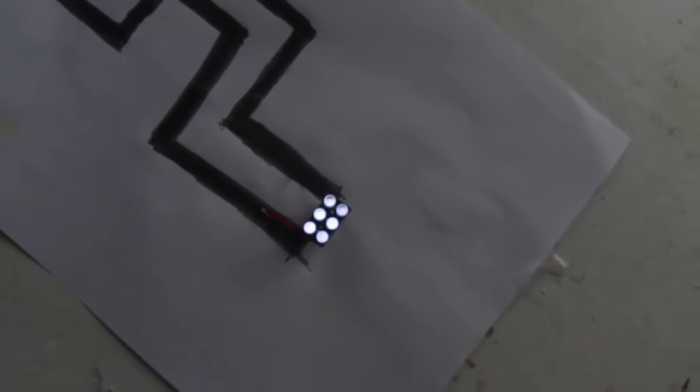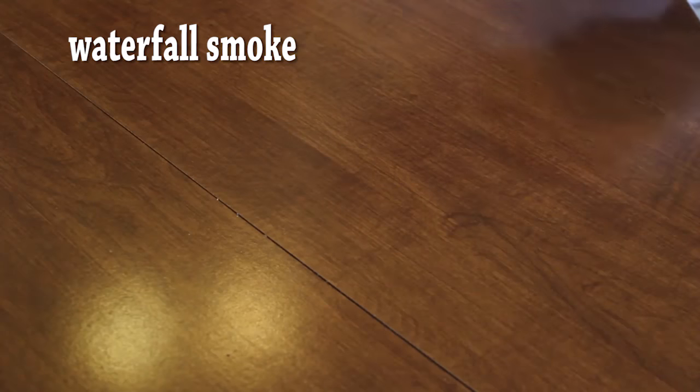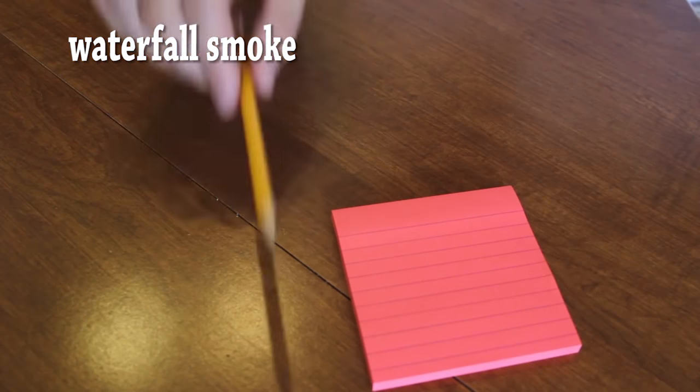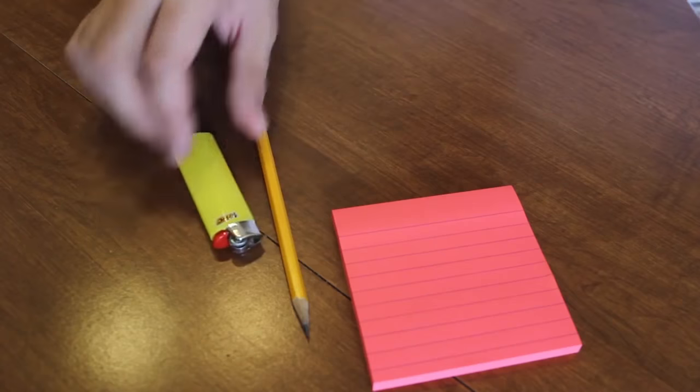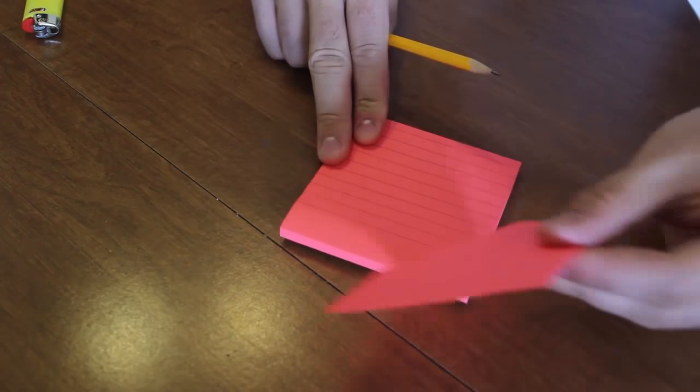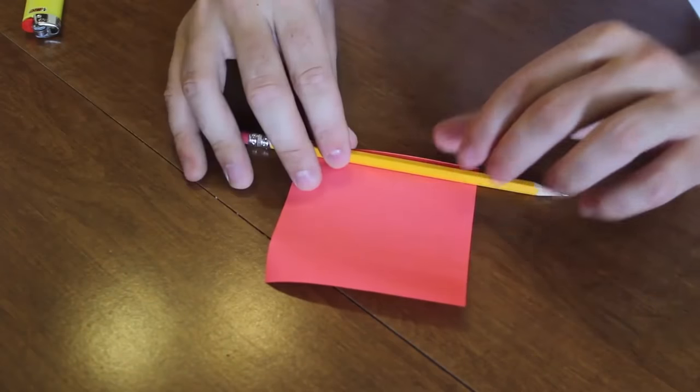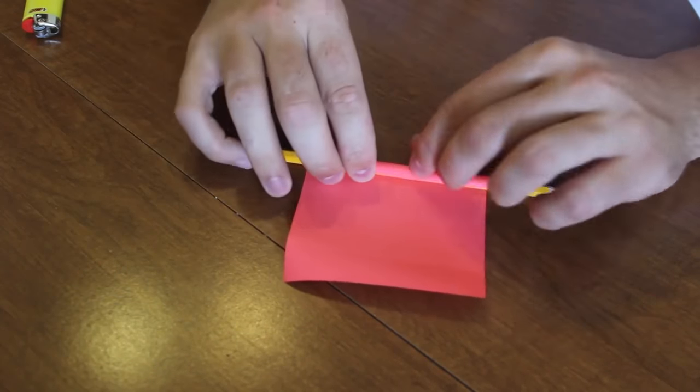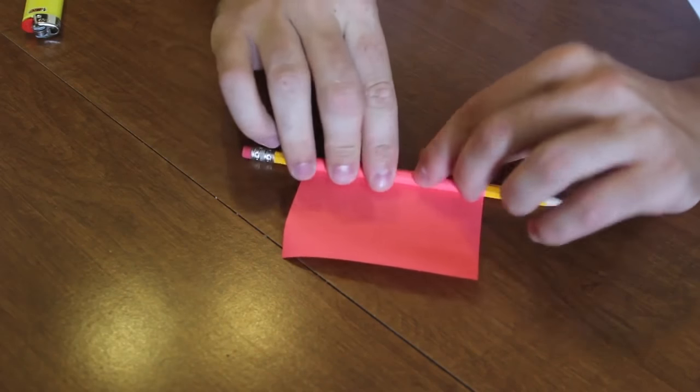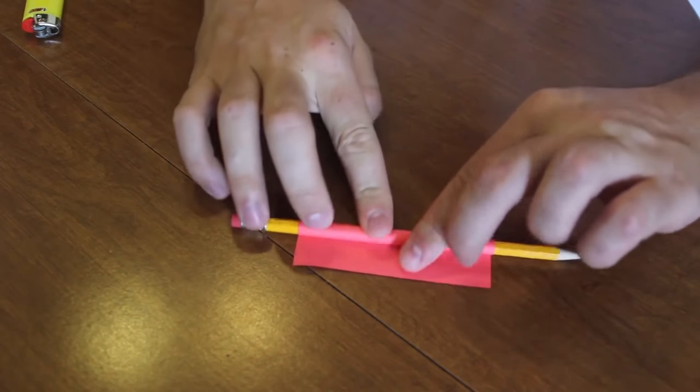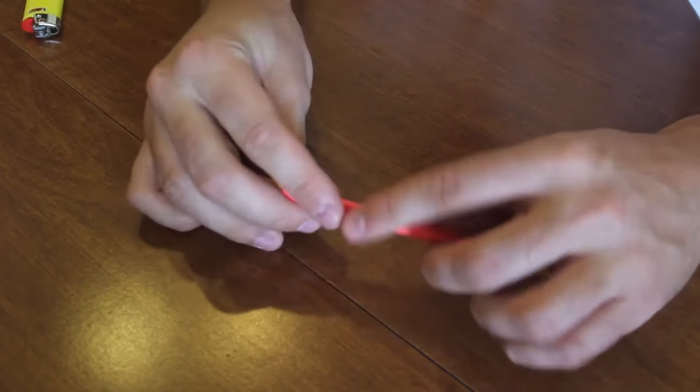This experiment we're going to need sticky notes, a pencil, and a lighter. What I'm going to do is grab a sticky note right here, sticky part on this side. Then I'm going to put the paper down here and roll the paper up all the way up to the sticky side and make sure it sticks.